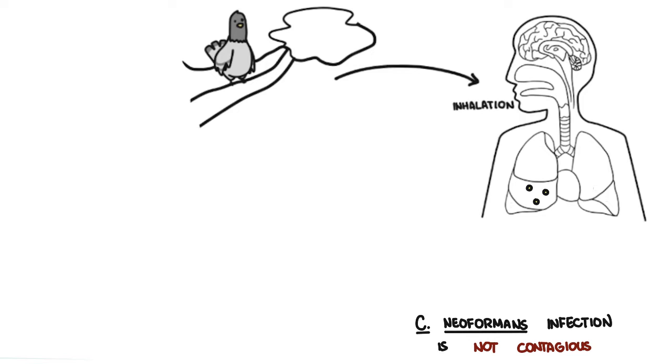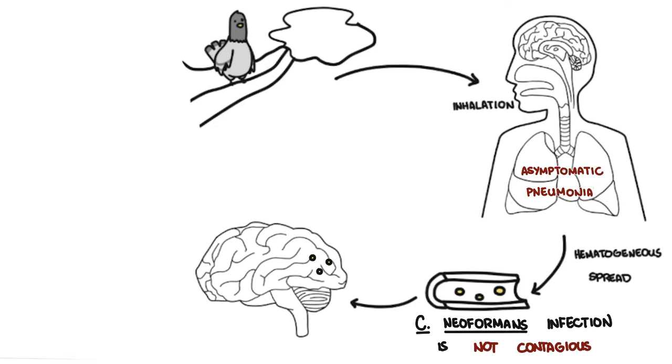Upon inhalation of Cryptococcus neoformans, the spores can colonize the lung, where it will typically cause an asymptomatic pneumonia. From here, in an immunosuppressed person, the fungus can then spread hematogenously across the blood-brain barrier and infect the brain tissue. The central nervous system is the most common secondary site of infection.